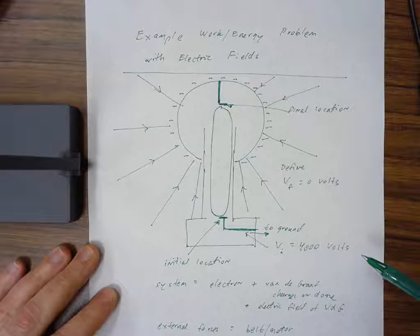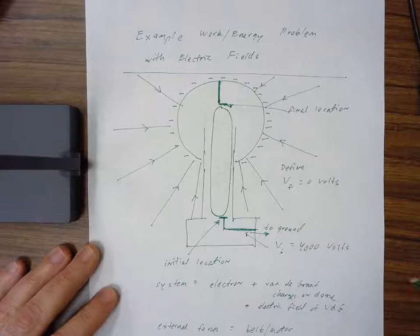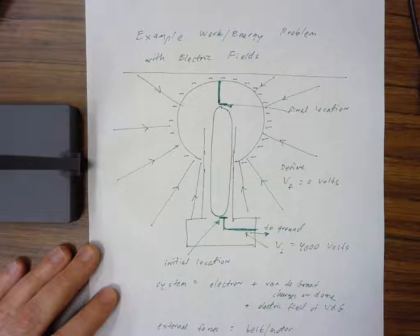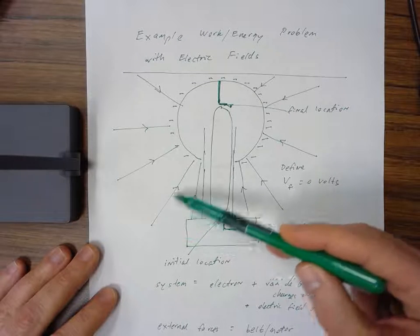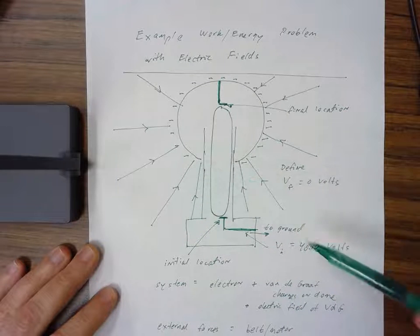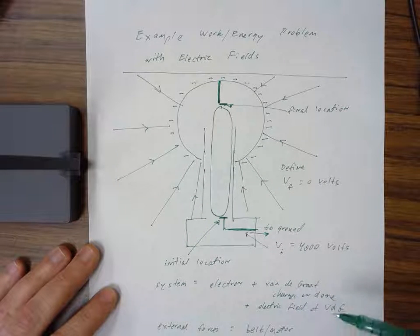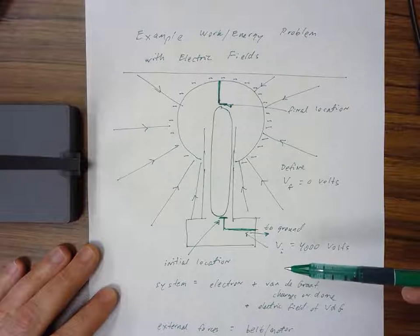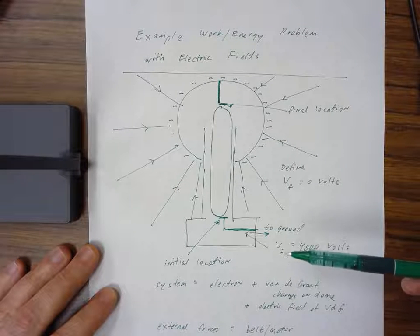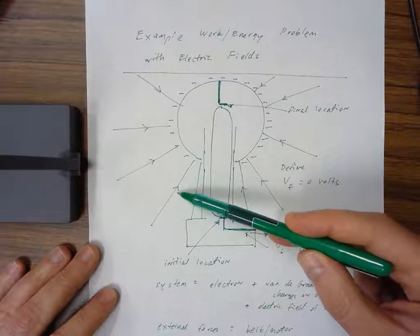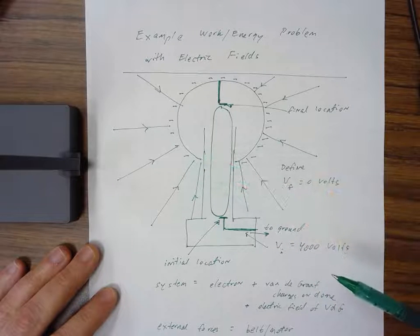That negative charge on the Van de Graaff has created an electric field that I've also drawn—these electric field lines pointing radially inward. That's the direction a positive test charge would experience a force, since it would be attracted to the negative Van de Graaff.